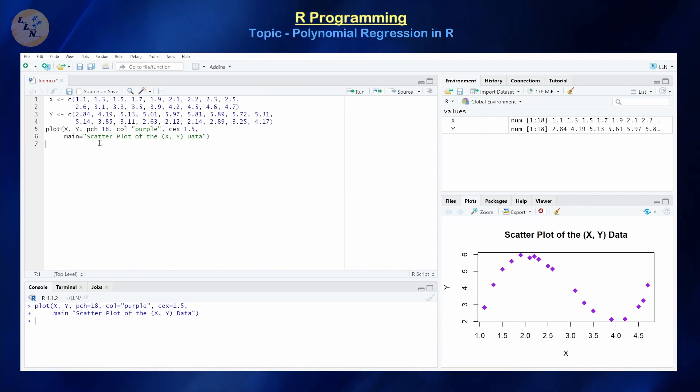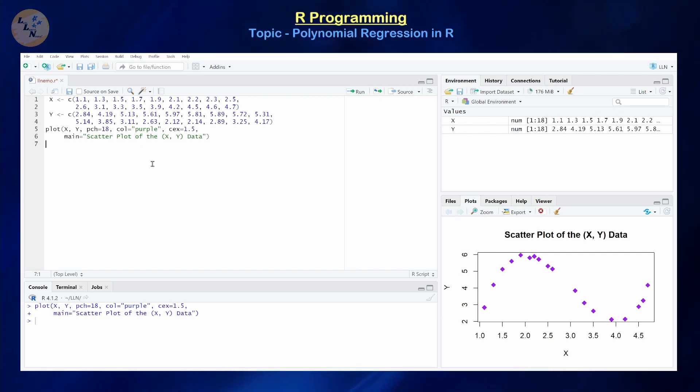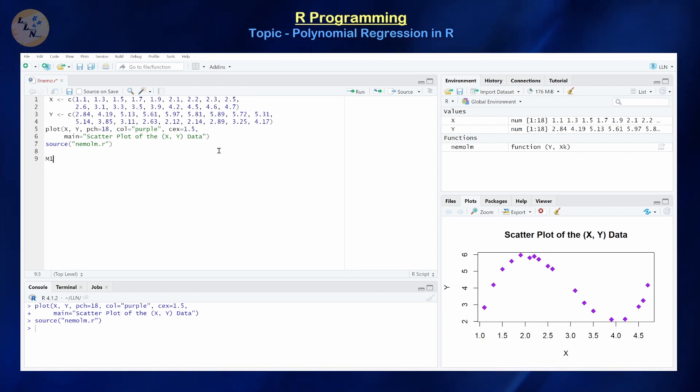So up to this point you should be familiar with how to create regression models using R. Of course there are several pre-built functions, for example the LM function, but we've actually already created our own via the series which I called the NEMO LM function. So I'm just going to import that and use that. Alright, so the first model that I'm going to build is going to be a degree 1 model.